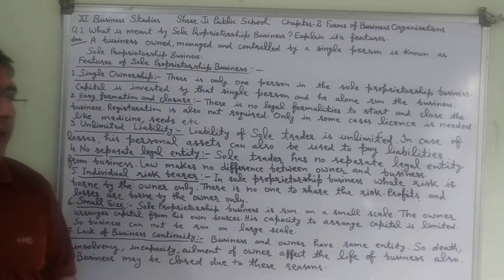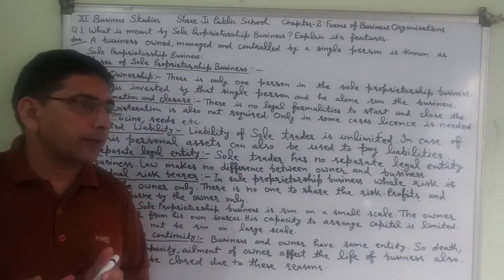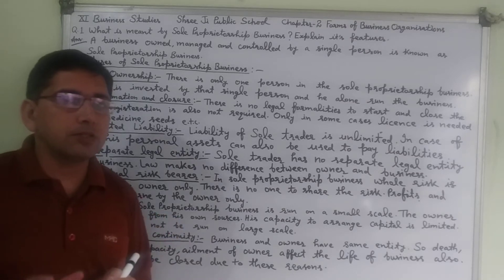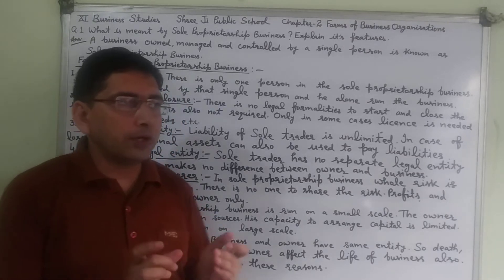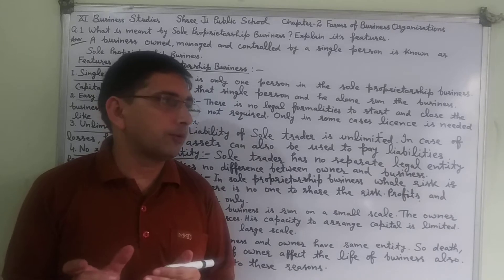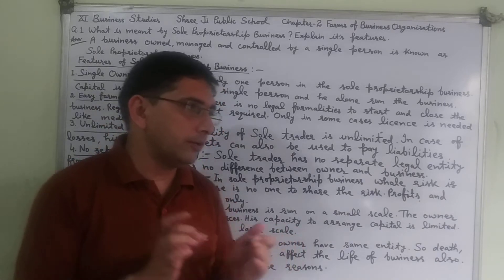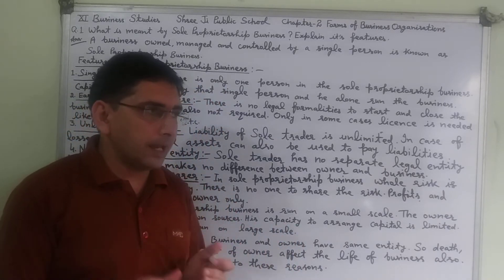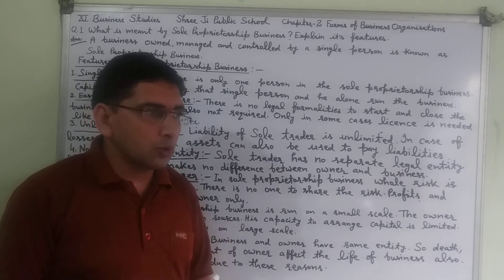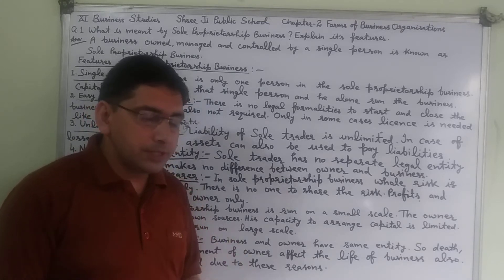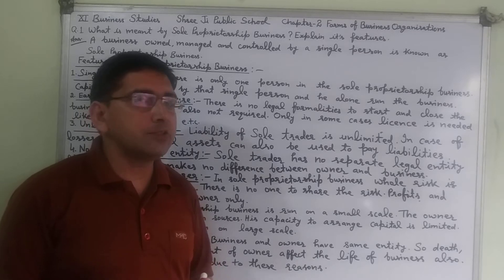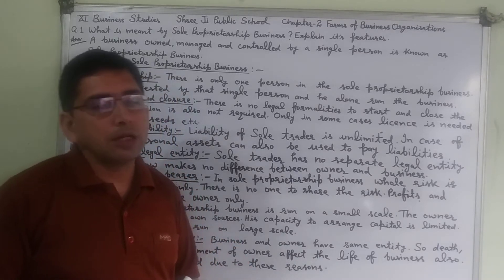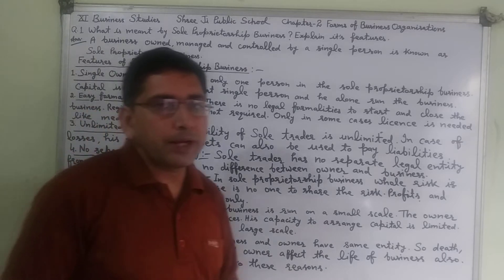Sole proprietor, or sole trader we can say. A business which is run by a sole trader — sole means alone, only one, only a single person is there in the business. That type of business is known as a sole proprietorship business. A business which is run and managed by only a single individual is known as a sole proprietorship business.